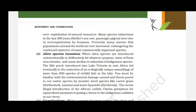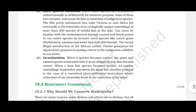Fourth, co-extinctions. When a species becomes extinct, the plant and animal species associated with it in an obligatory way also become extinct. When a host fish species becomes extinct, its unique assemblage of parasites also meets the same fate. Another example is co-evolved plant-pollinator mutualism, where extinction of one invariably leads to the extinction of the other.